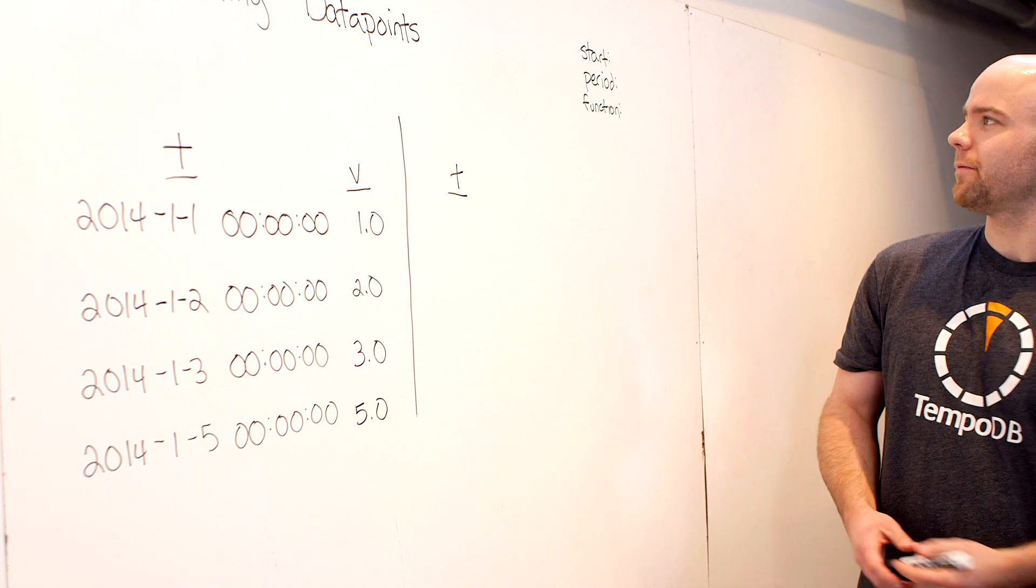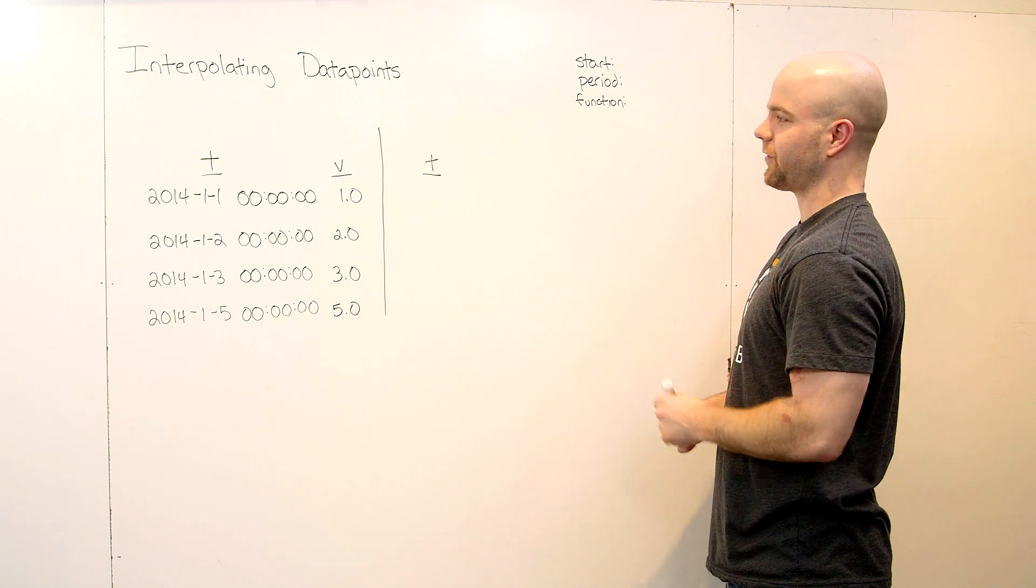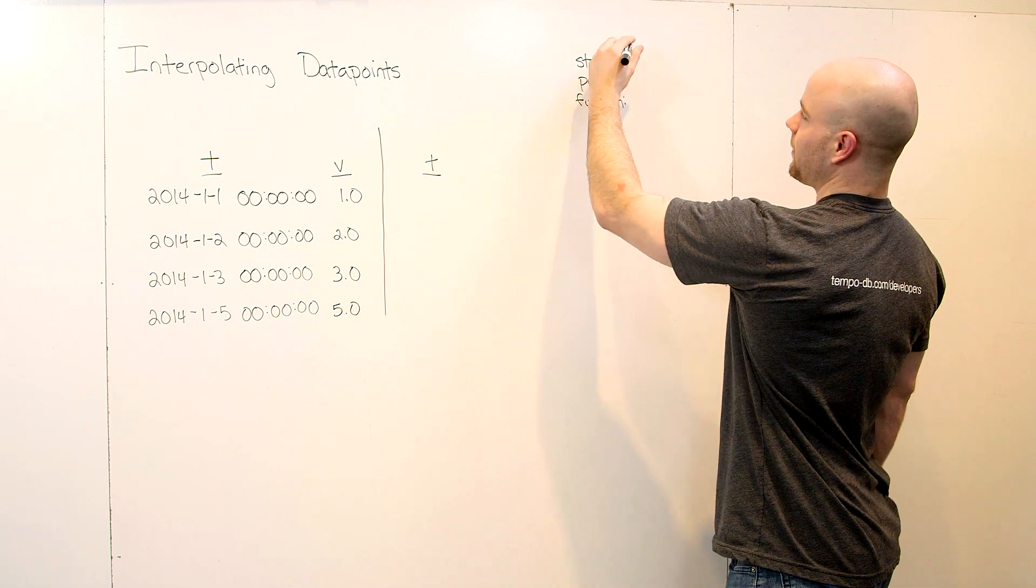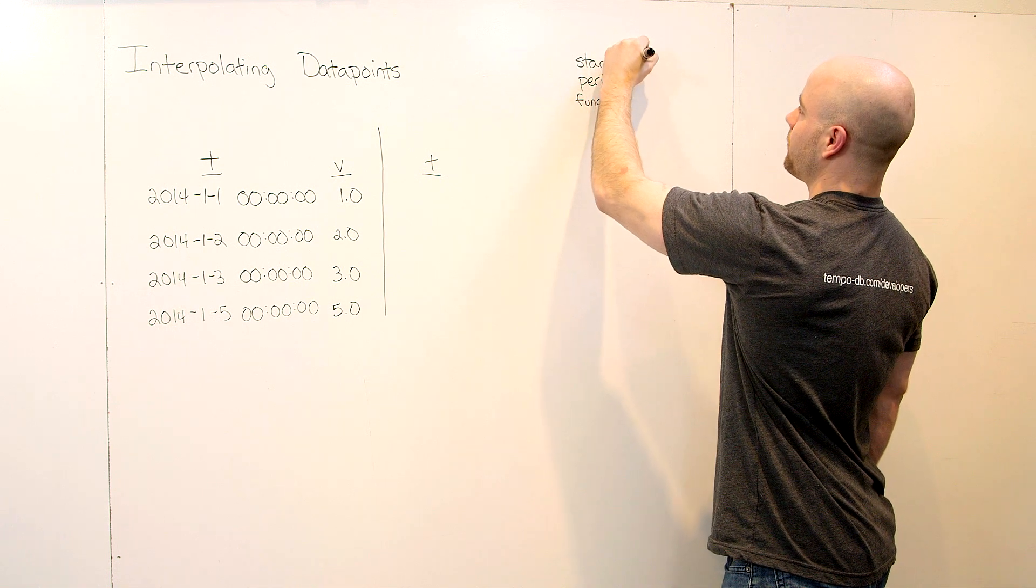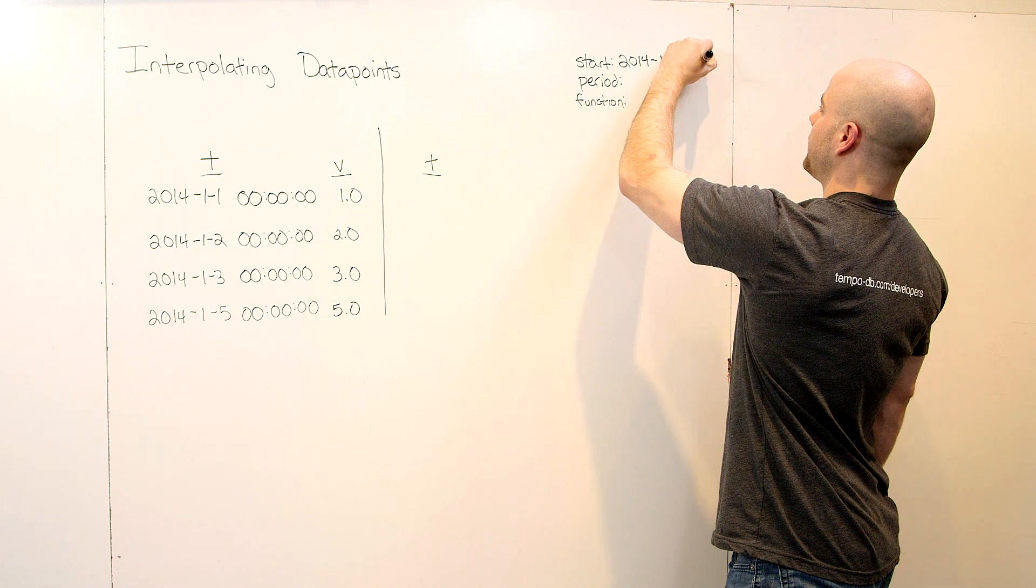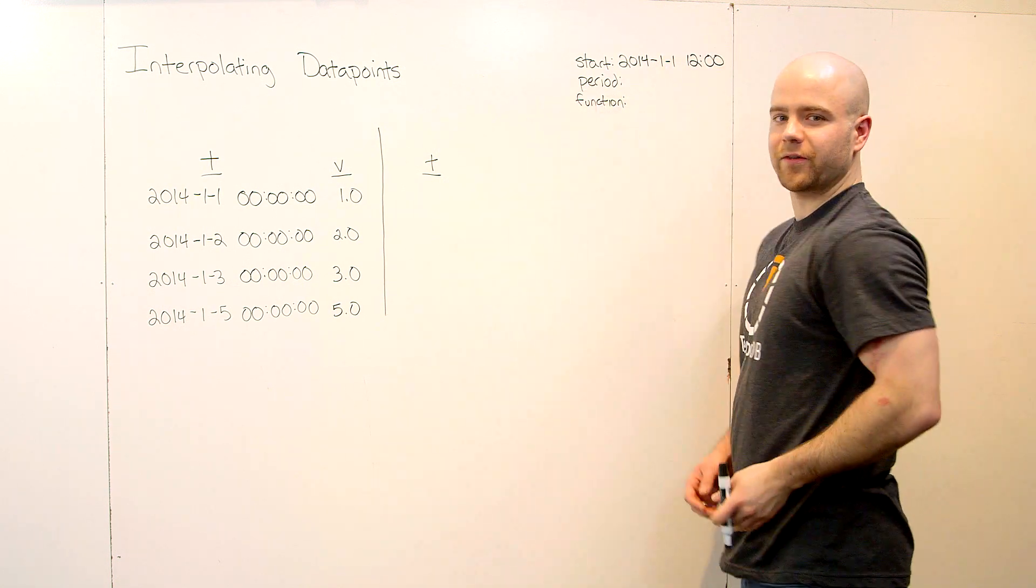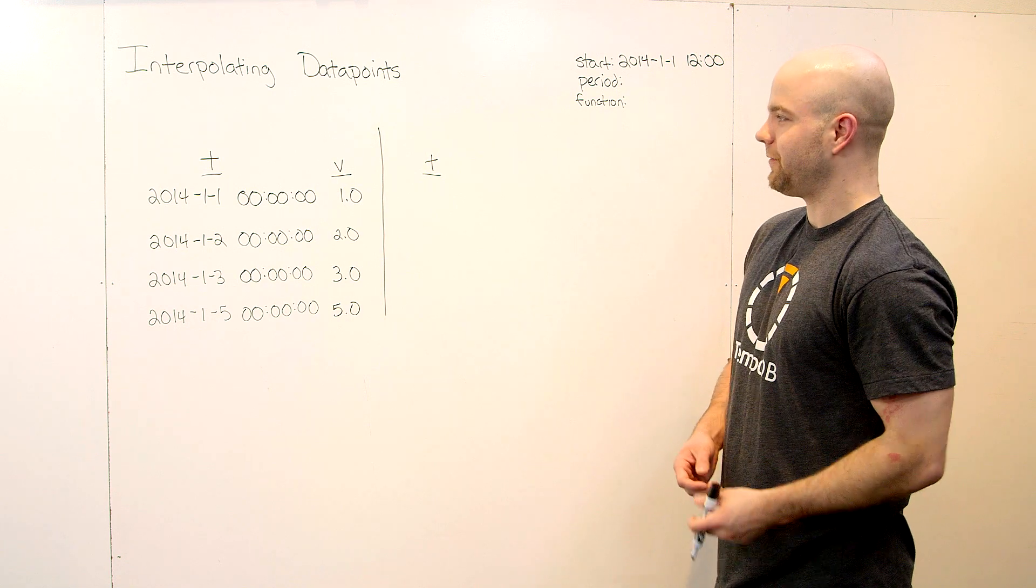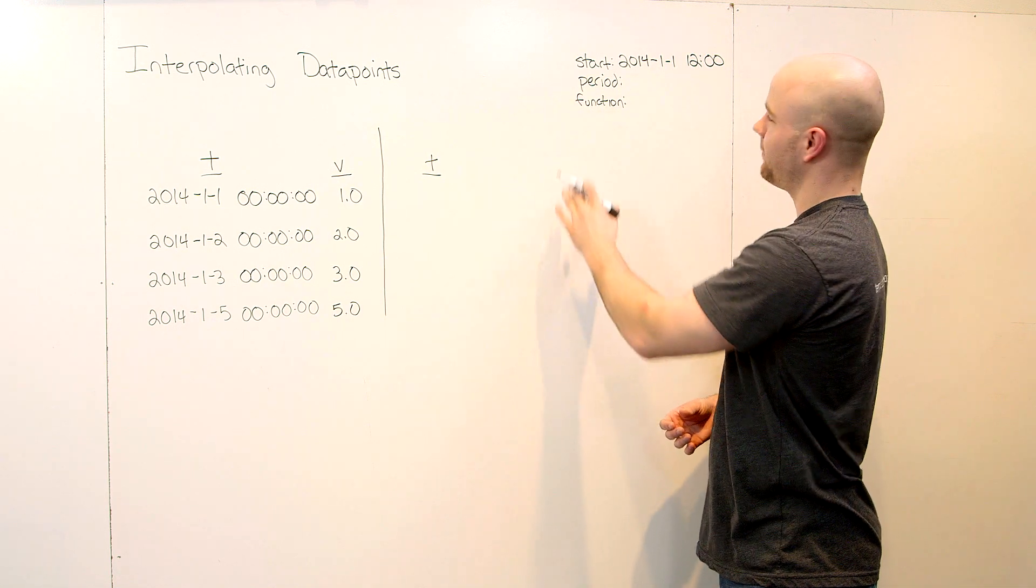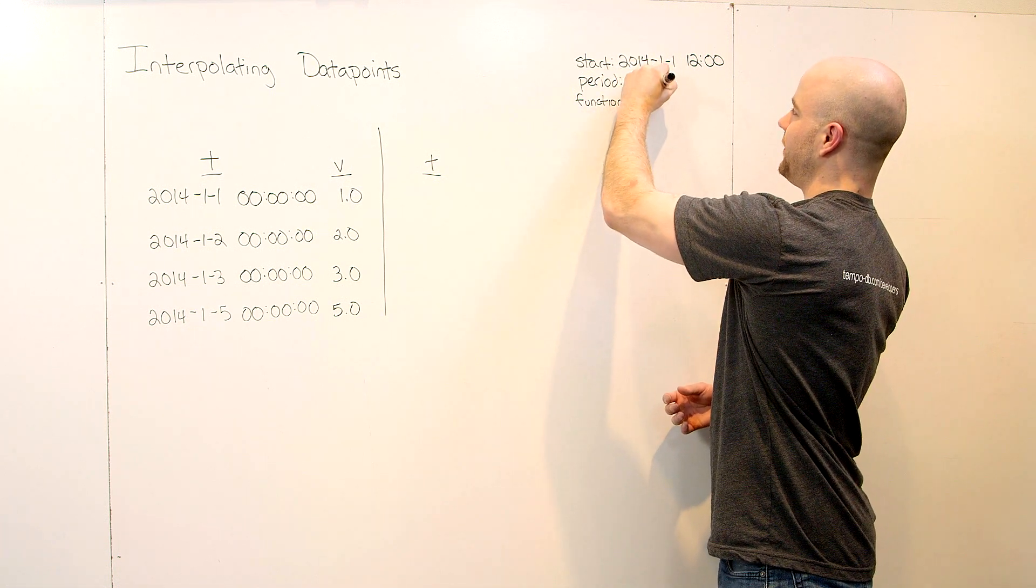To kick off, we've got three necessary parameters to start working with interpolation. The first is the start time of the query. In this case, as an example, we're going to start on January 1st at noon. We'll see why in a minute. Period is similar to the other period parameters we've gone over. In this case, it's the spacing of the interpolated points that are going to be generated. For this particular example, we're going to go with one day.